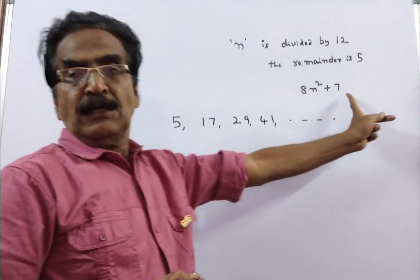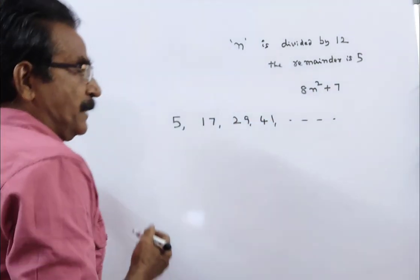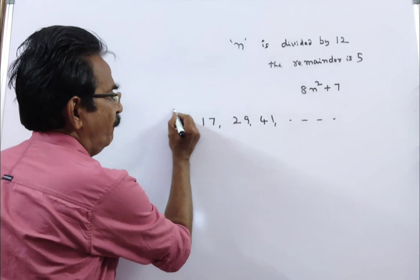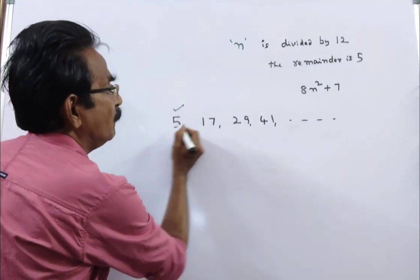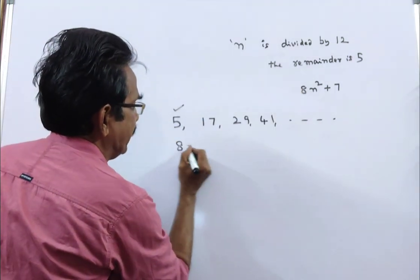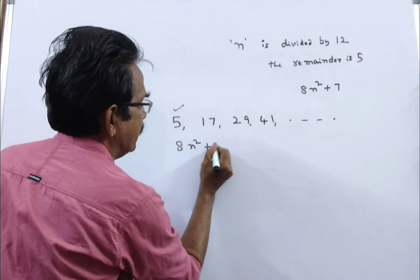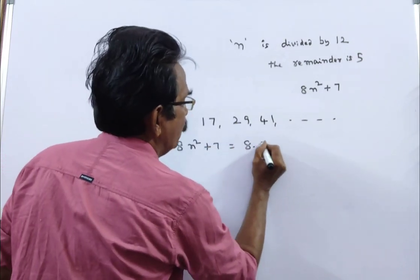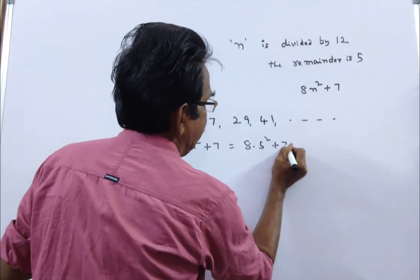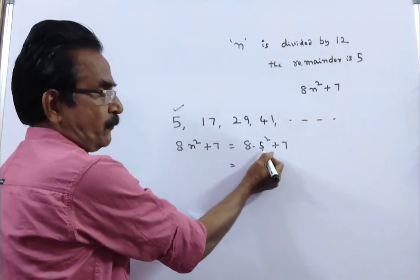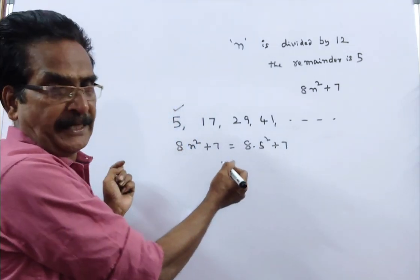You can take any value of n to substitute in 8n² + 7. I am taking 5. If n equals 5, then 8n² + 7 equals 8 times 5² plus 7, which equals 8 times 25 plus 7, equals 200 plus 7.